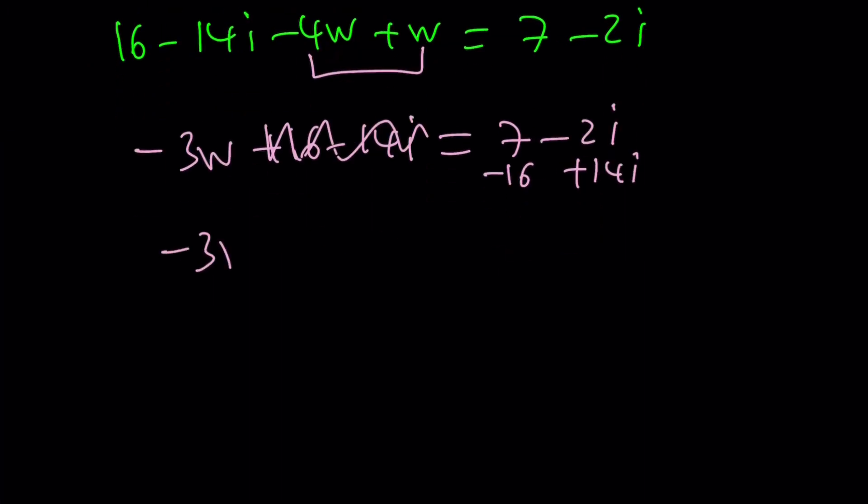Let's do it. Negative 3w from here is going to be negative 9 plus 12i. And then, since I'm trying to find z and w, I'll divide both sides by negative 3. 3 is going to cancel out. And this gives us 3 minus 4i for w.